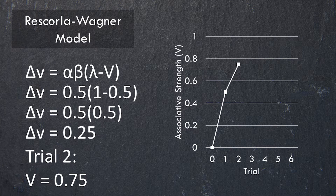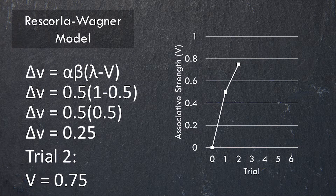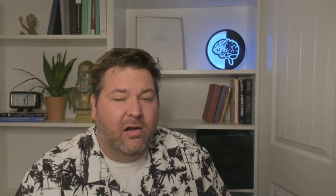Let's see what happens when I go back to Taco Bell for trial two. I order the same thing and lambda hasn't changed, but now my V is different — my total associative strength starting out is 0.5 because of that first trial. So this time: lambda minus V is 1 minus 0.5, which is 0.5. Multiply that by the constant 0.5, and I get delta V equals 0.25. The new total V is 0.75. On trial two I learned something, but not as much as I had learned on that first trial.